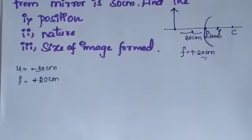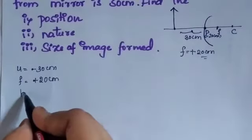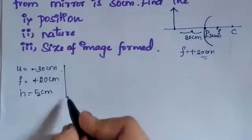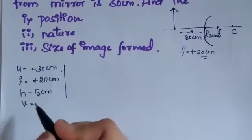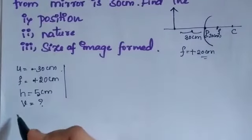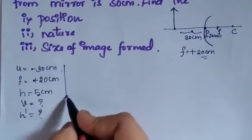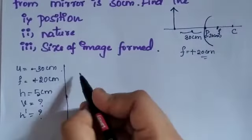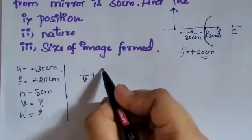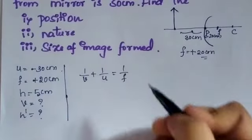H is given as 5 cm — a 5 cm tall object, so H = 5 cm. Now let's find V, the image distance, and also H dash, the image height. We use the same mirror formula: 1/V + 1/U = 1/F.